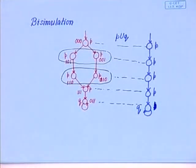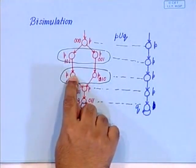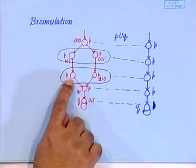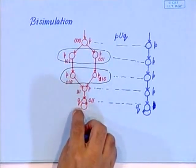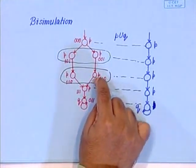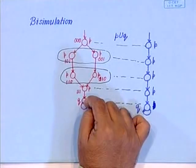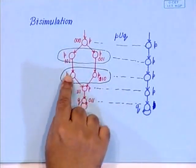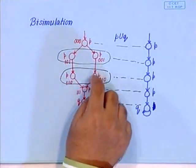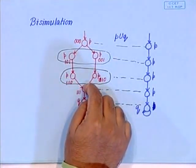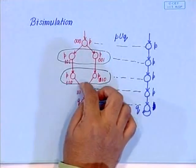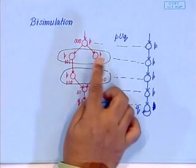Why are we saying that these two are equivalent? Because in terms of the propositions p and q, their future is the same. For example, from this state, I get p in the next state, and then q in all the next states. From this state also, I get p in the next state, and q in all the next states. So if your next states are the same, then your futures are the same, because both of them are going to the same next state.